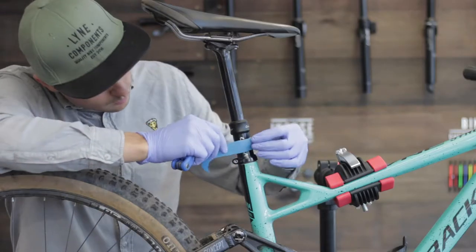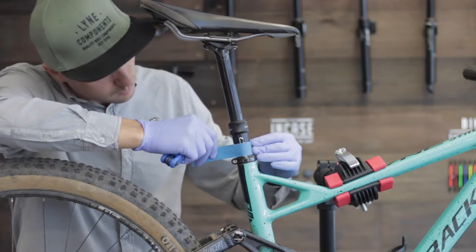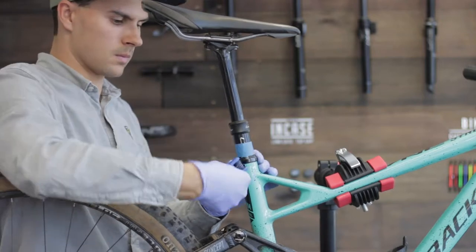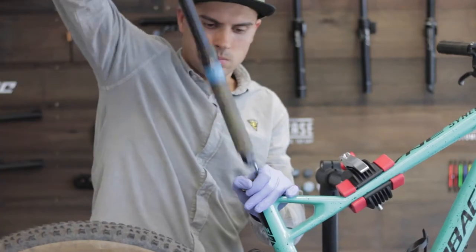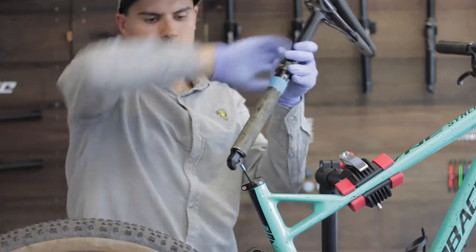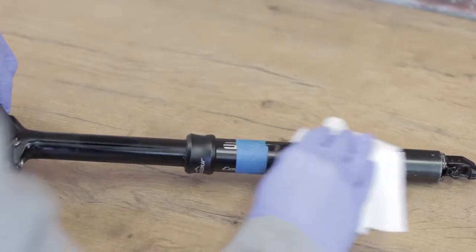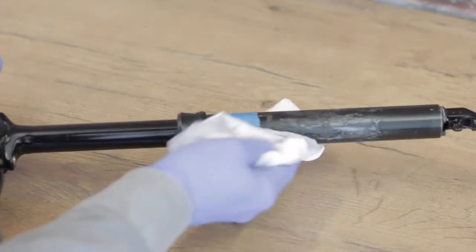Use your masking tape to mark your saddle height. This will make it easier when you reinstall the dropper post. Remove the dropper post from your bike. Give the post a good clean using your paper towel.